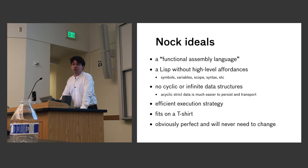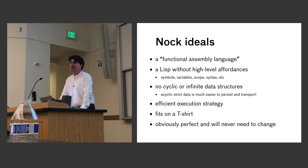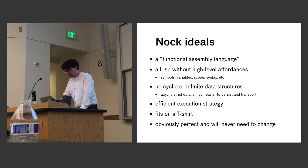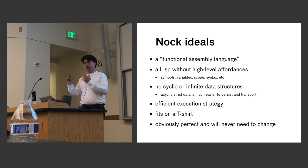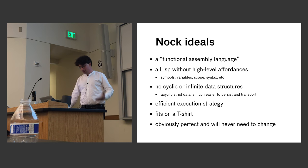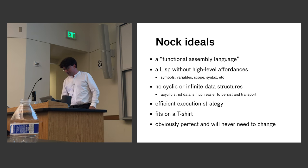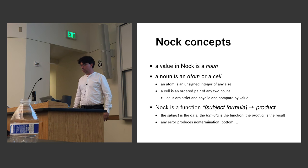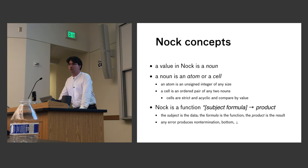If you're sending data over the network, how do you send a lazy list or a cycle over the network? This is definitely designed for the network edge. It should be extremely efficient, fit on a t-shirt, and be obviously perfect. A value in Nock is a noun — our version of S-expressions. Nock is a function from two nouns — a subject and a formula — to a product. The subject is the data, the formula is the function, the product is the result. Errors are defined as non-termination.